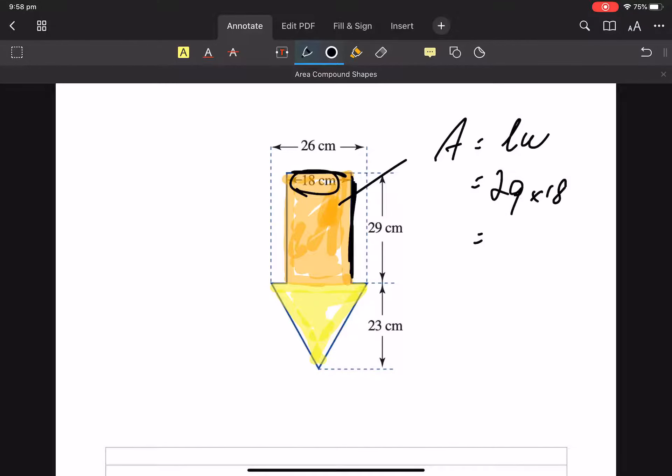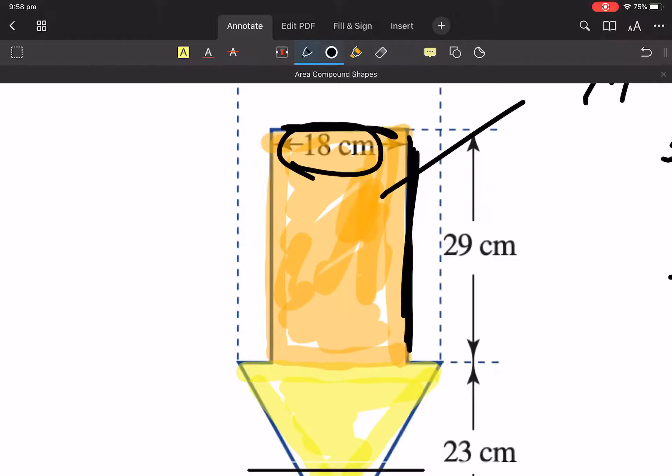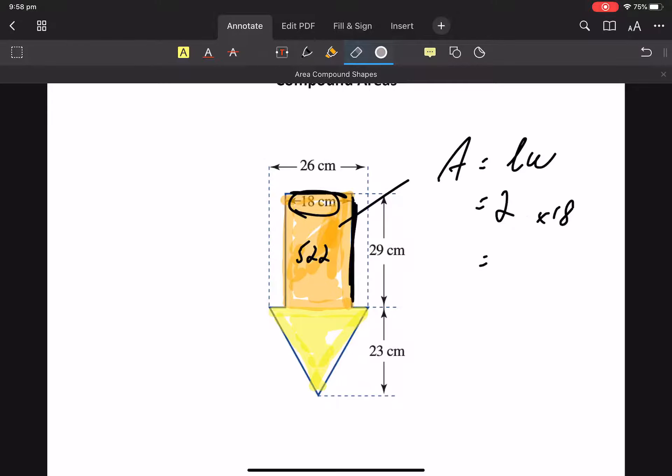Get a calculator, 29 times 18. So this little section in here is 522 square centimetres, 522 square centimetres.